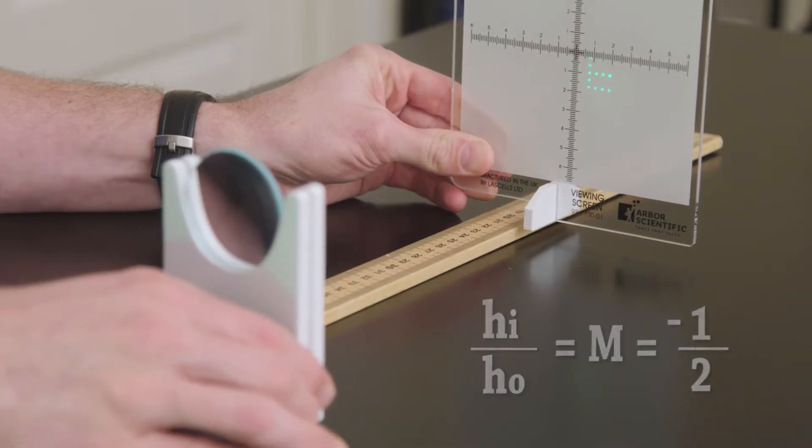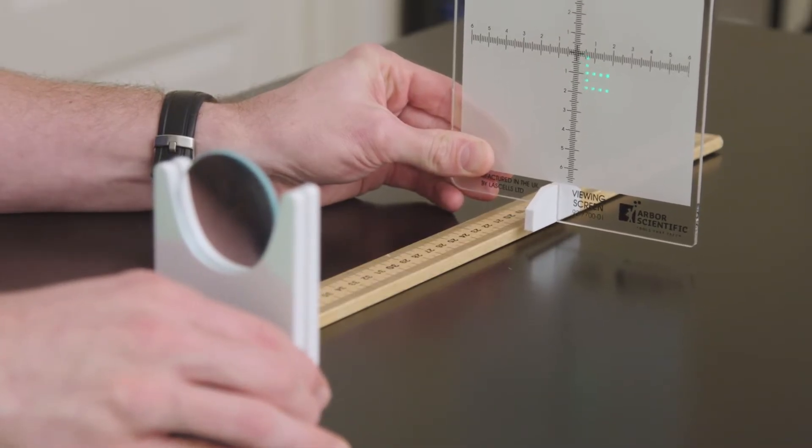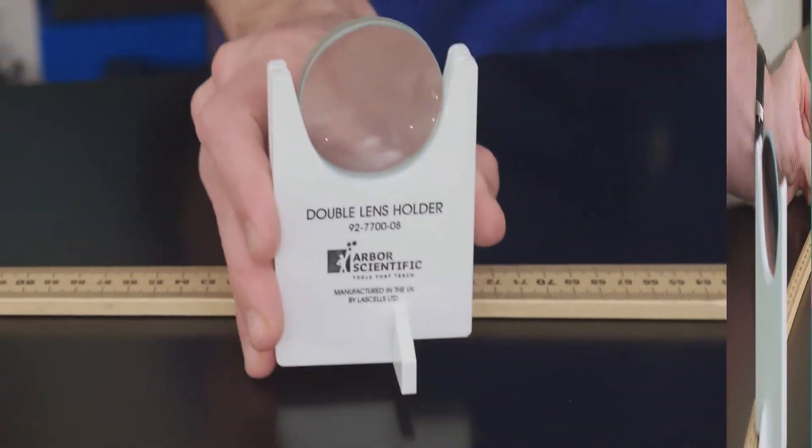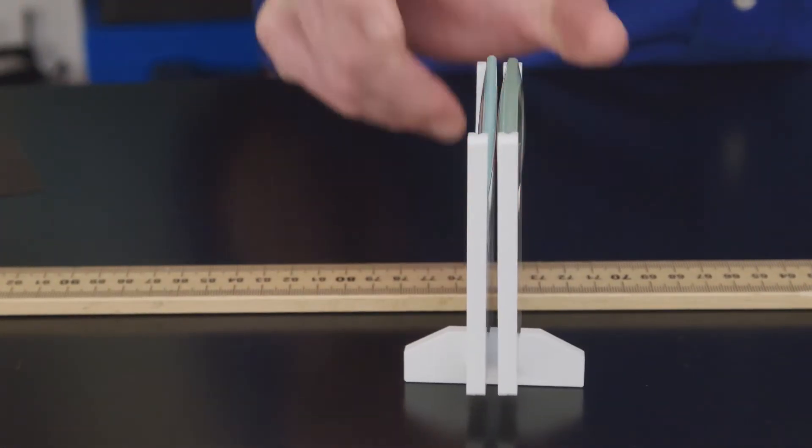Of course I'm using a convex lens, and the set comes with two different focal lengths. You can even combine these convex lenses to get a new focal distance.